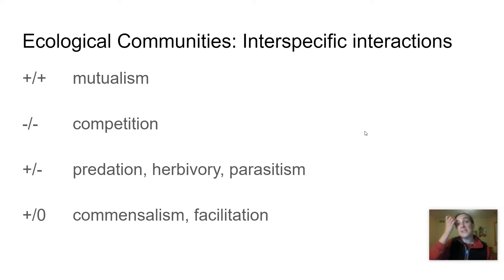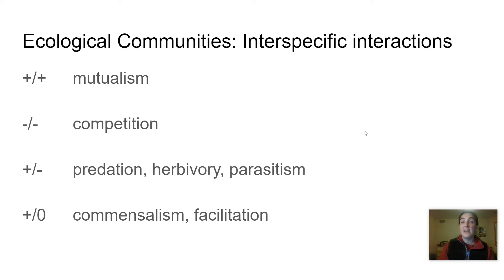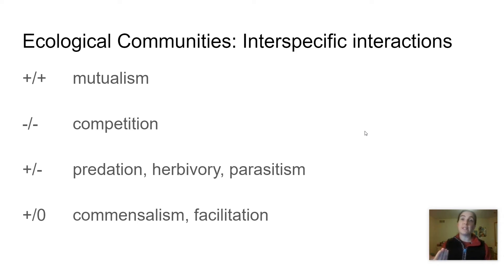The last group of interactions are what we call plus-zero interactions. You may have heard of commensalism before. This is something like those fish that swim after sharks and just eat the scraps that fall off behind them. It's good for those fish because they get some food, but the sharks really don't care if somebody's cleaning up their scraps or not. Facilitation is similar — it's a plus-zero, so one benefits and the other isn't affected at all. But facilitation tends to change an entire ecosystem in a way that benefits other species down the line. For example, lichen growing on a rock starts breaking down that rock and creating little pockets of soil that allow other types of plants to land and start growing. It benefits the other plants that come later, but doesn't really affect the lichen one way or the other.